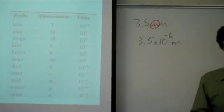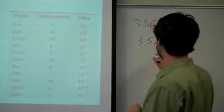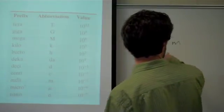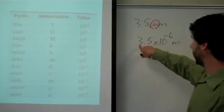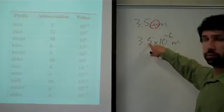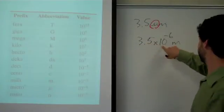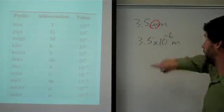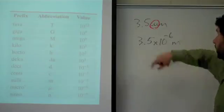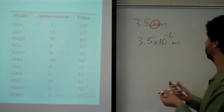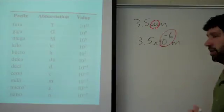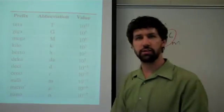Right now we're actually already in scientific notation, because we have a digit, a decimal, the rest of our digits, and our power of 10. Note that all we did was replace 'micrometers' with 'times 10 to the negative 6th.'